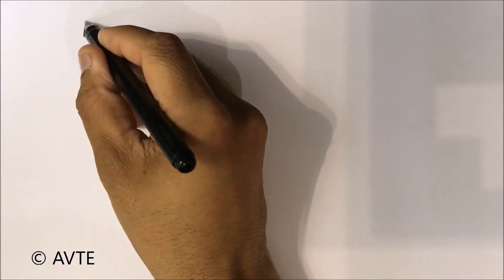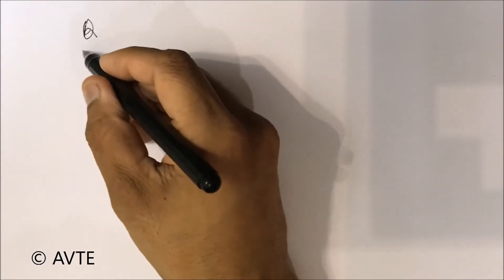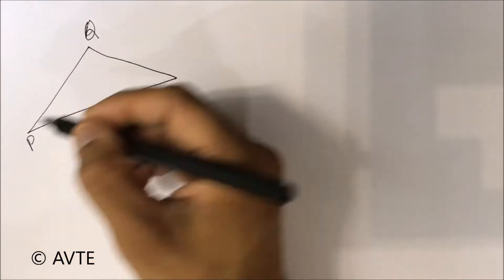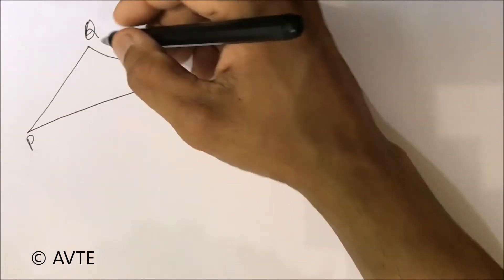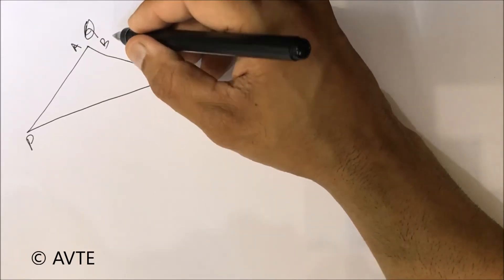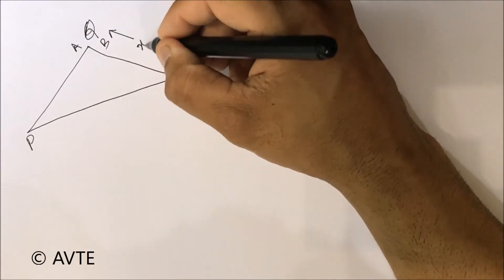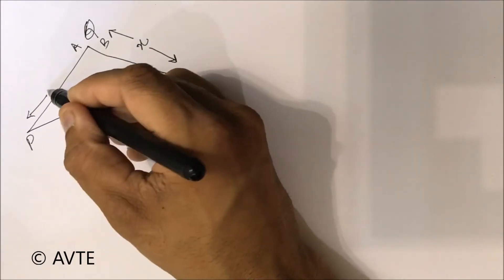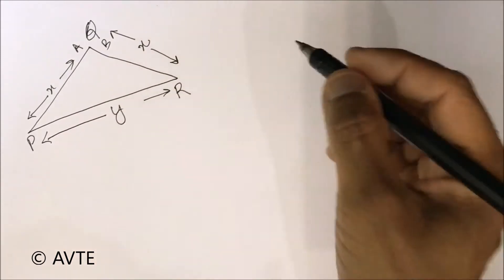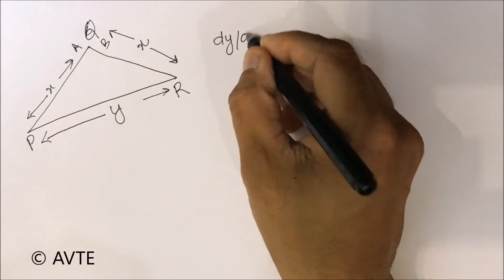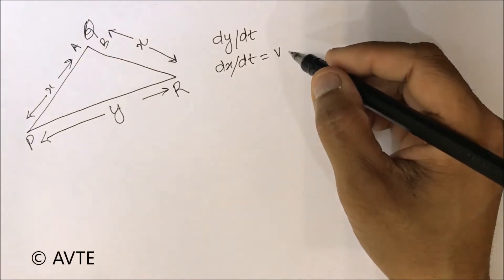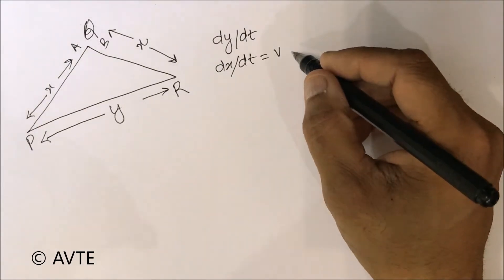A and B move from point Q. A reaches point P and B reaches point R. Since A and B are traveling with the same velocity in equal time, they will obviously cover equal distance. Let that distance be X units and the distance between them be Y units. The target is to find dy/dt, and dx/dt is given as V — say V meters per second.